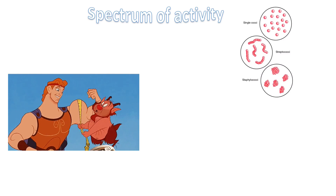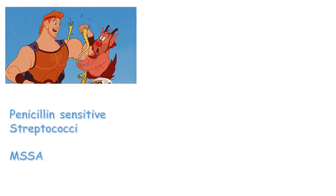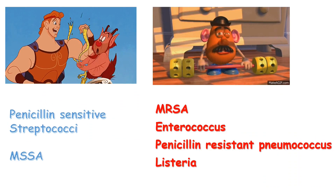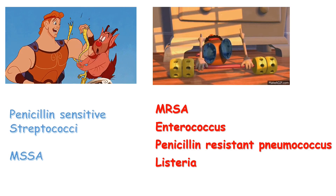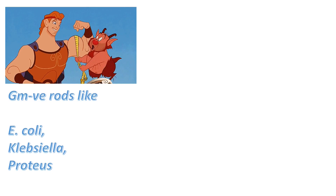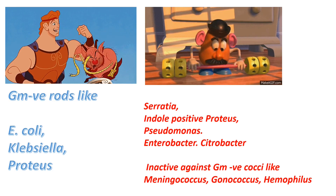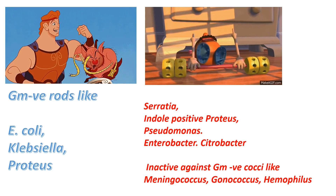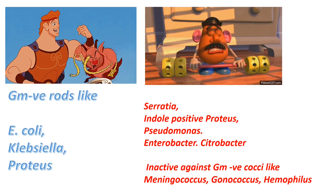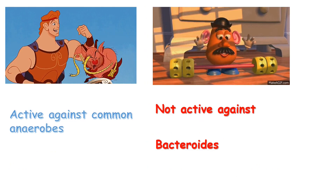First generation cephalosporins are active against some gram-positive organisms, some gram-negative organisms, and some anaerobes. For gram-positives, they're active against streptococci and methicillin-sensitive Staphylococcus aureus (MSSA), but inactive against MRSA, enterococcus, penicillin-resistant pneumococcus, and Listeria monocytogenes. For gram-negatives, they're active against E. coli, Klebsiella, and Proteus, but inactive against Serratia, indole-positive Proteus, Pseudomonas, Enterobacter, Citrobacter, Neisseria meningitidis, Neisseria gonorrhoeae, and Haemophilus influenzae.